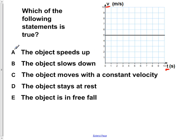So choice A says that the object speeds up. From what we can see given on our velocity versus time graph, the object's speed is not changing over this entire time interval of t equals 10 seconds. So our object is not speeding up.